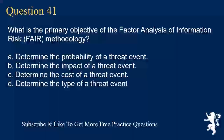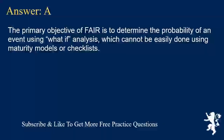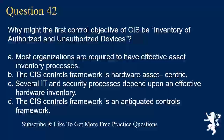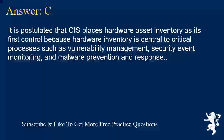Question 41. What is the primary objective of the Factor Analysis of Information Risk (FAIR) methodology? A. Determine the probability of a threat event. B. Determine the impact of a threat event. C. Determine the cost of a threat event. D. Determine the type of a threat event. Answer A. The primary objective of FAIR is to determine the probability of an event using what-if analysis, which cannot be easily done using maturity models or checklists. Question 42. Why might the first control objective of CIS be an inventory of authorized and unauthorized devices? A. Most organizations are required to have effective asset inventory processes. B. The CIS controls framework is hardware asset-centric. C. Several IT and security processes depend upon an effective hardware inventory. D. The CIS controls framework is an antiquated controls framework. Answer C. It is postulated that CIS places hardware asset inventory as its first control because hardware inventory is central to critical processes such as vulnerability management, security event monitoring, and malware prevention and response.